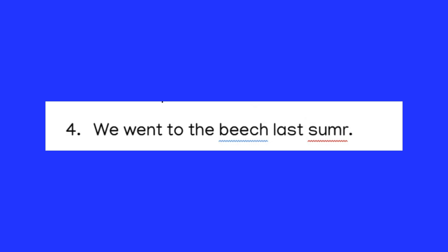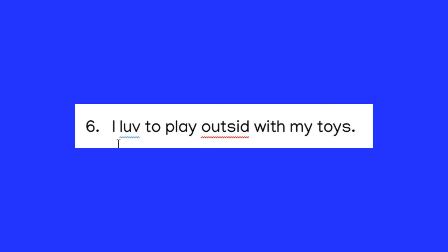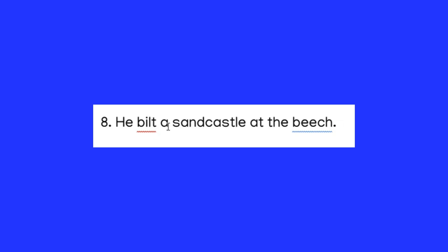Now you're ready to complete these last sentences on your own. Here they are: We went to the beach last summer. The teacher read a story to the class. I love to play outside with my toys. The cat jumped onto the table. He built a sand castle at the beach.